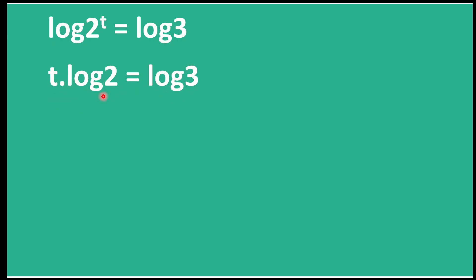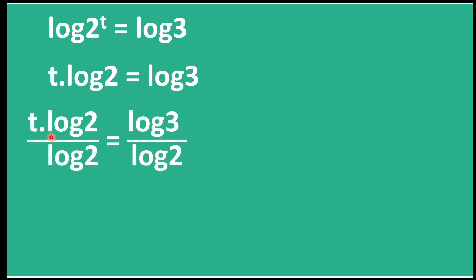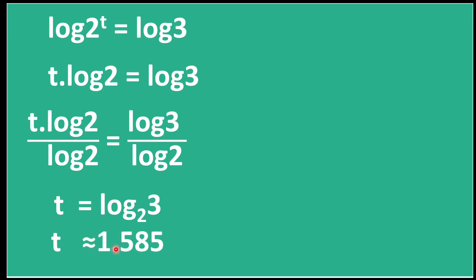Dividing both sides by log 2, the log 2 cancels and we get t = log 3 / log 2. By the change-of-base property, this equals log base 2 of 3, which is approximately 1.585. This is the answer to the given question.